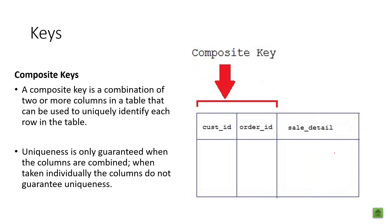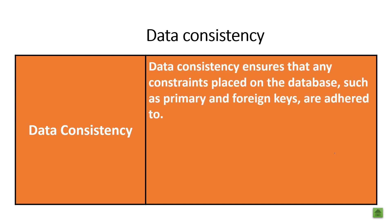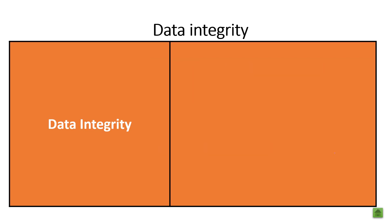So far we've discussed flat file databases, relational databases, primary keys, foreign keys and composite keys. Now let's talk about the data itself. It's important that data is consistent, ensuring that constraints such as primary and foreign keys are adhered to. Any transactions that are about to happen need to see all previous changes — otherwise we could get unexpected results. Any edits or changes need to be fully committed before carrying out the next database command.